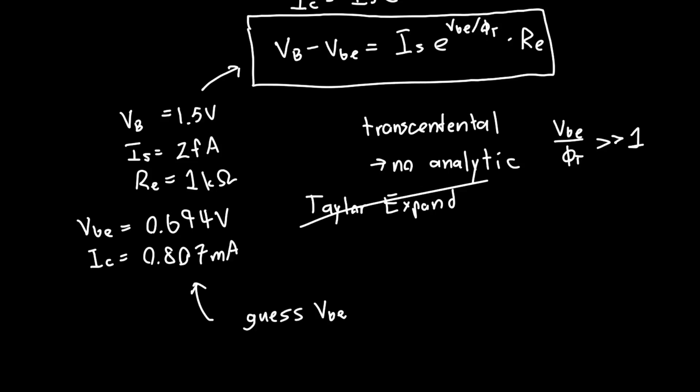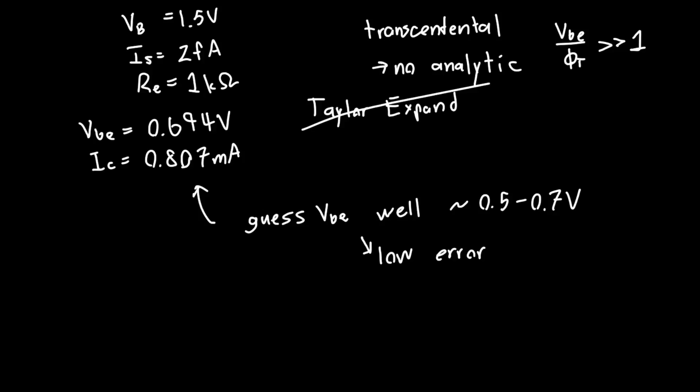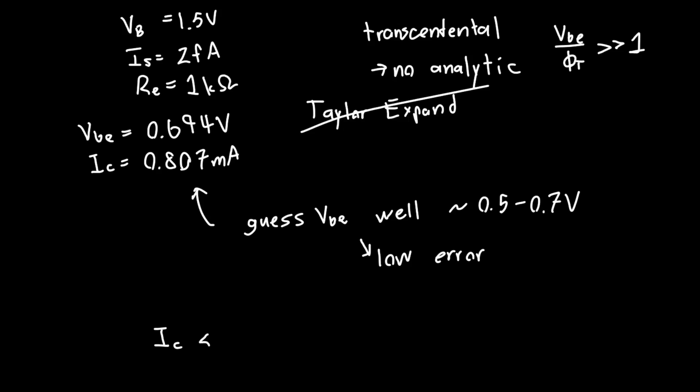That's because if you guess VBE well, then your result will have very low error. Typically your instructor is going to be guessing VBE for you, in the range of 0.5 to 0.7 volts. The reason we can usually get away with this is that for large variations in IC, the exponential dependence means that VBE does not change much, even for large deviations in IC.